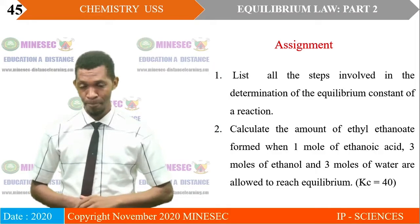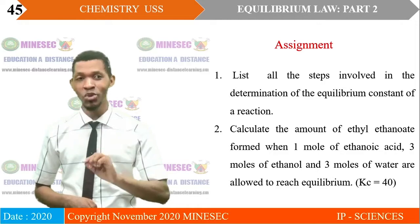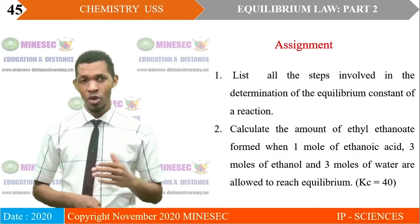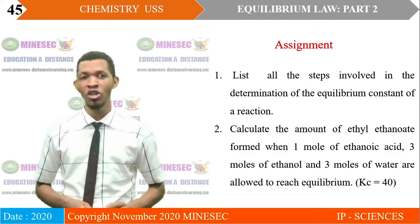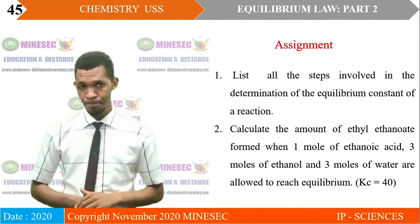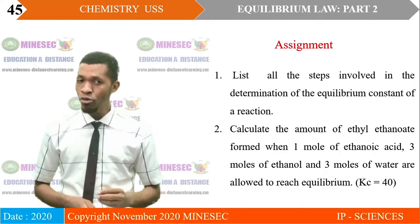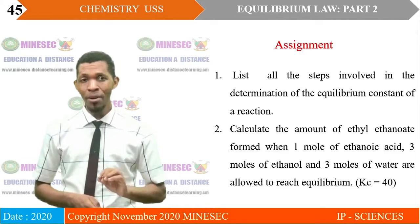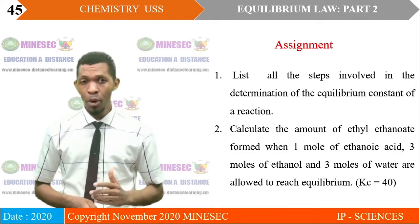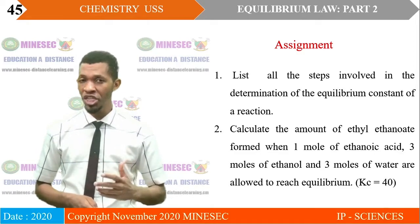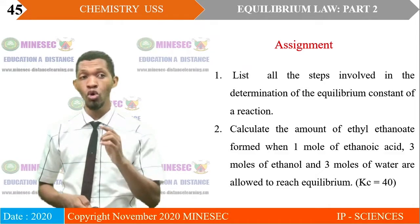Assignment. Before our next lesson, I would like you to answer these questions. Question 1: List all the steps involved in the determination of the equilibrium constant of a reaction. Question 2: Calculate the amount of ethyl ethanoate formed when one mole of ethanoic acid, three moles of ethanol, and three moles of water are allowed to reach equilibrium, given that the equilibrium constant Kc = 40.